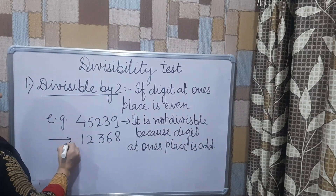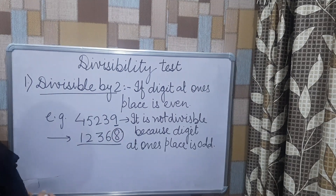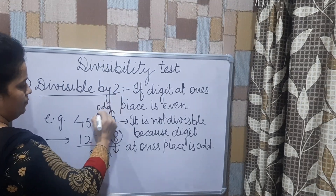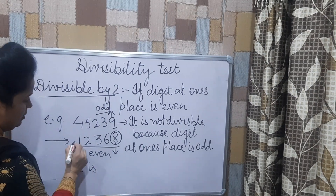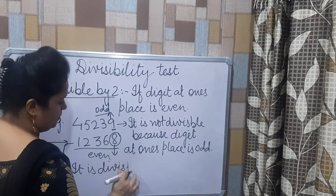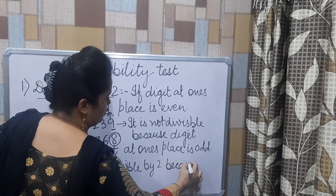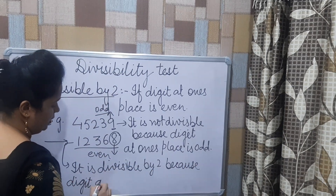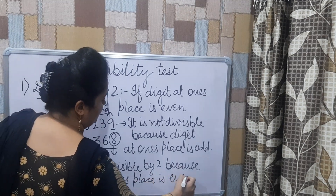Now let us check the second case. In this case, the digit at the 1's place is 8, and 8 is an even number. So it is divisible by 2 because the digit at the 1's place is even.